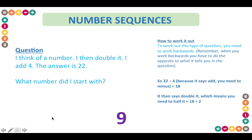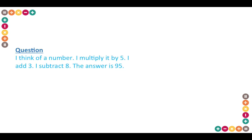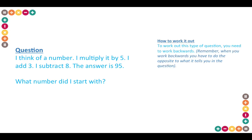Let's move on to another practice question. I think of a number, I multiply it by five, I add three, I subtract eight, the answer is 95. What number did I start with? Again the same principles apply — you would need to work backwards and do the opposite to what the question is saying.